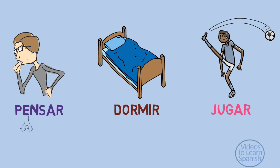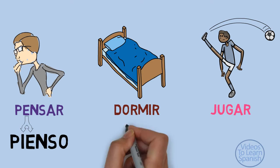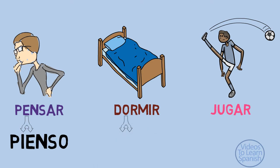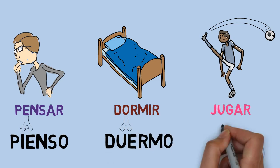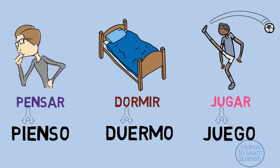Pensar — pienso. E becomes IE. Dormir — duermo. O becomes UE. Jugar — juego. U becomes UE.